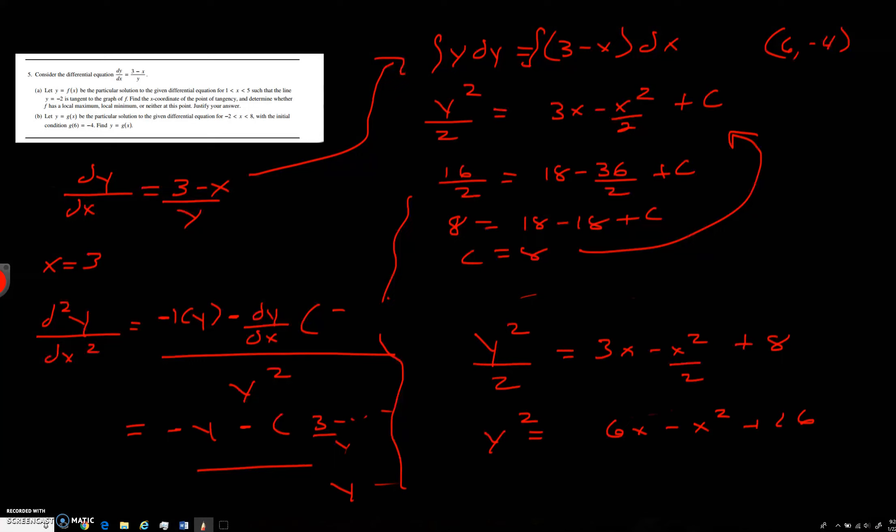And now we're going to take the root of both sides. So we're going to get y equals square root of 6x minus x squared plus 16. But we need to get negative 4. The only way you're going to get negative 4 is if this root is negative to begin with. So I hope this video helps and I will see you next time.